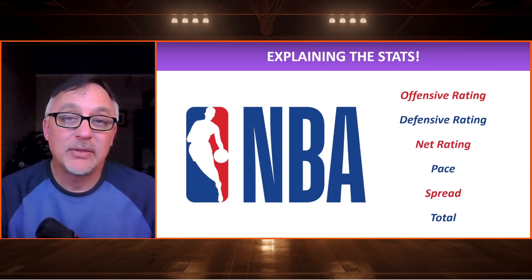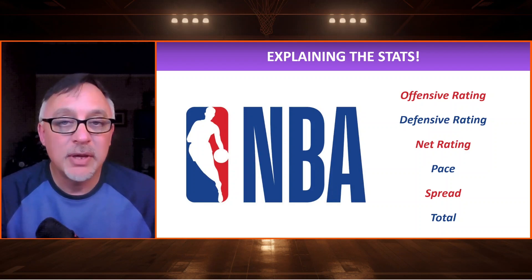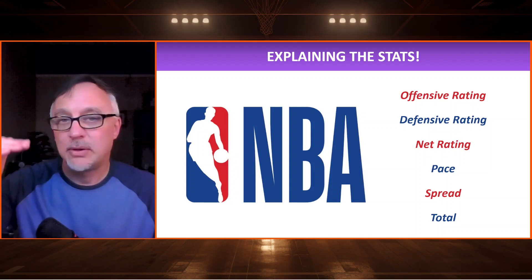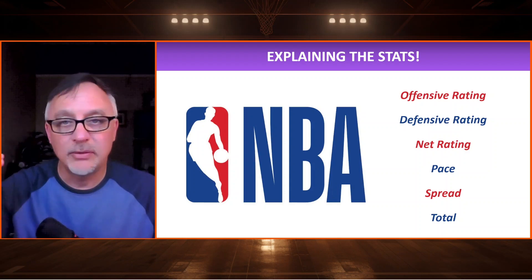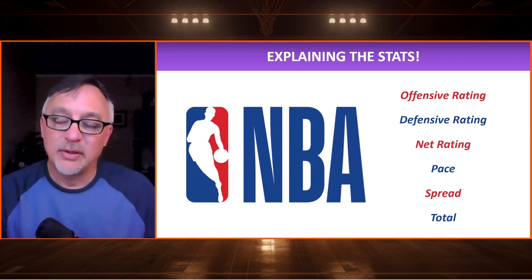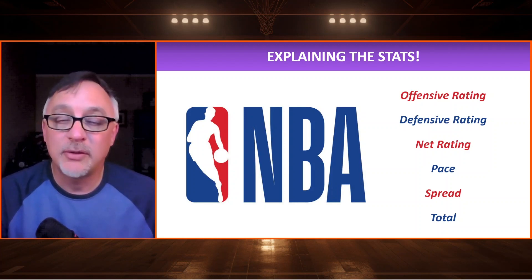So that's it — those are the stats. I hope you enjoyed this video. In the third and final part of building an NBA model, I'm going to show you the Python code from beginning to end. We're going to scrape the data, create the dataset, calculate all these stats — offensive rating, defensive rating, and so on — save everything to a CSV file, and use that in an Excel spreadsheet to make predictions about the spread and the point total. See you in the next video.